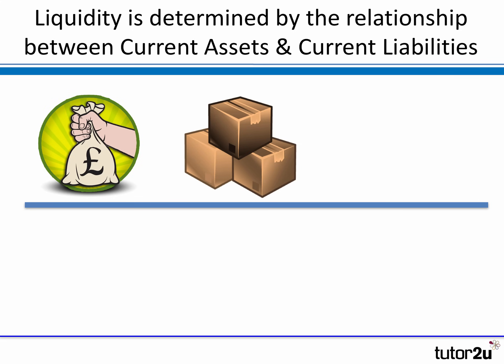Many businesses, particularly manufacturers, retailers, and wholesalers, hold significant stocks. Thirdly, in just about all major businesses, there are amounts owed to the business by customers, known as trade debtors — customers who have been allowed to take products in return for agreeing to pay their invoices a little bit later. Those are the three main categories of current assets.